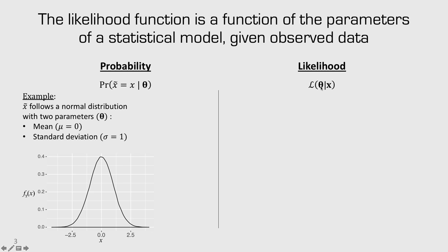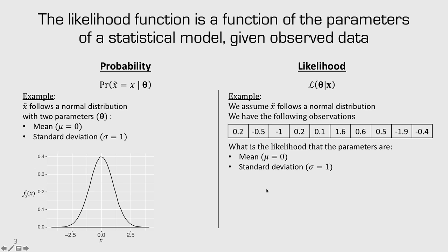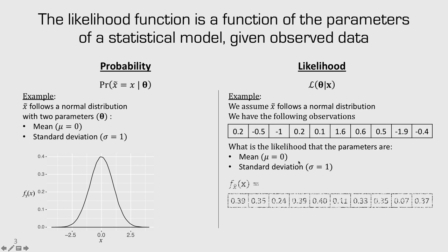In likelihood, we don't know the parameters, but we do have some observations from the random variable. For example, let's say we know that our random variable follows a normal distribution and we got these ten observations. We're going to ask the question: what is the likelihood that the true parameters are zero and one? The probability of any one of these values occurring we can calculate by just looking at the PDF. So the probability of this first observation occurring is 0.39 — that's just reading off the PDF. We can do that for every single observation we have.